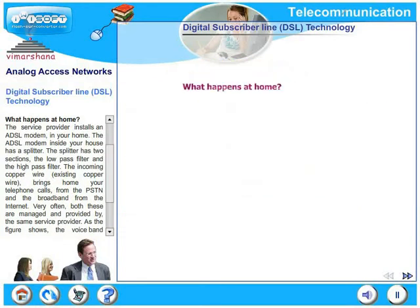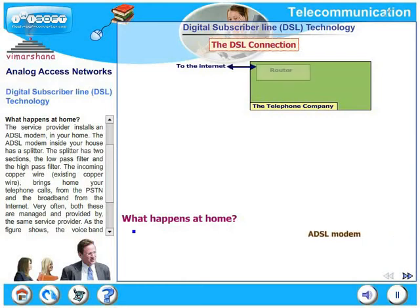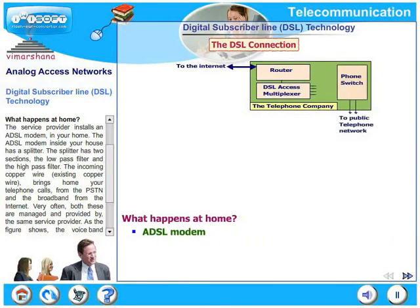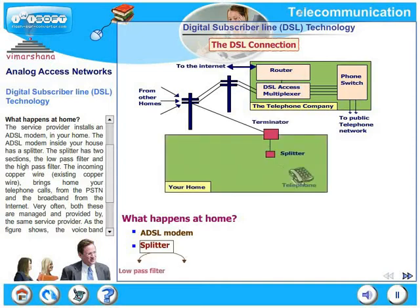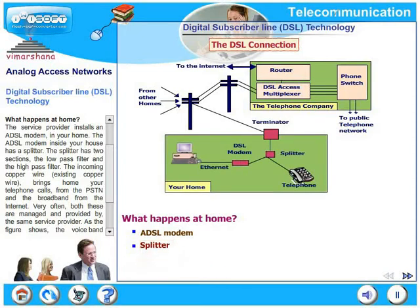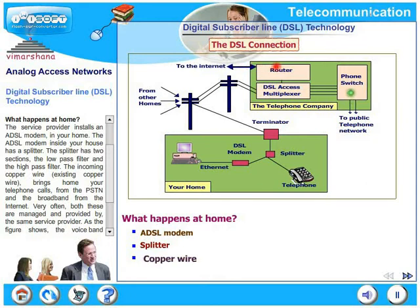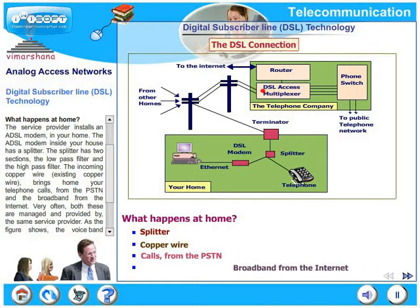What happens at home? The service provider installs an ADSL modem in your home. The ADSL modem inside your house has a splitter with two sections: the low-pass filter and the high-pass filter. The incoming copper wire, which is the existing copper wire, brings home your telephone calls from the PSTN and the broadband from your internet.